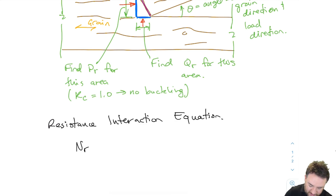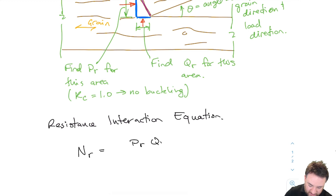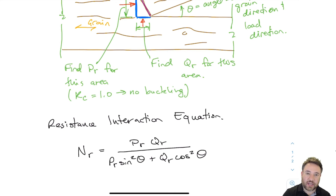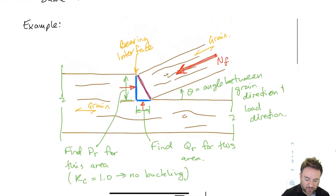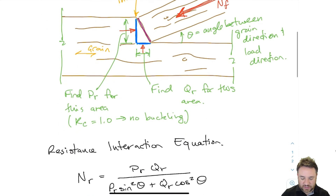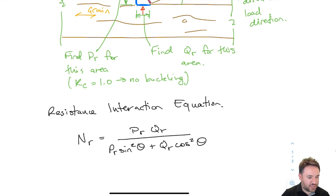So I find resistances QR and PR and plug them into the resistance interaction equation, which looks like this: NR equals PR times QR divided by (PR times sin²θ plus QR times cos²θ), where theta is the angle between the grain direction and the load direction. This gives a resistance NR that I compare to my load NF. We already know how to calculate PR and QR, so all we need to do is use the correct projected areas shown in blue, plug them into the interaction equation, and we're done. Next, we'll do an example to show how this works.